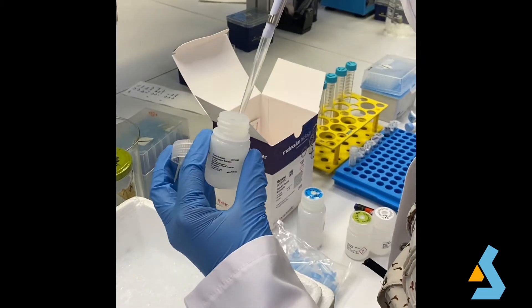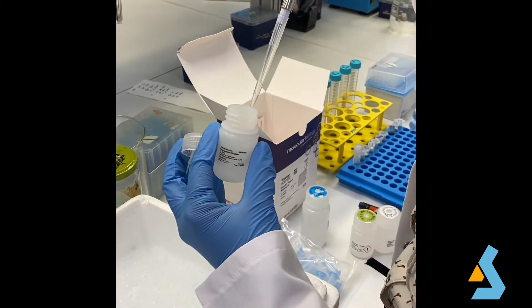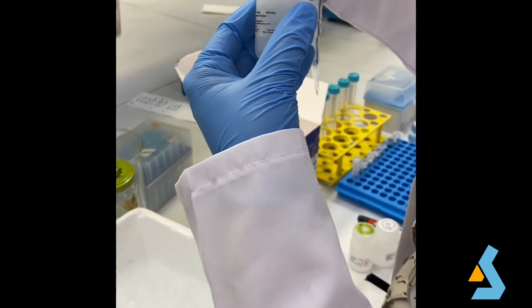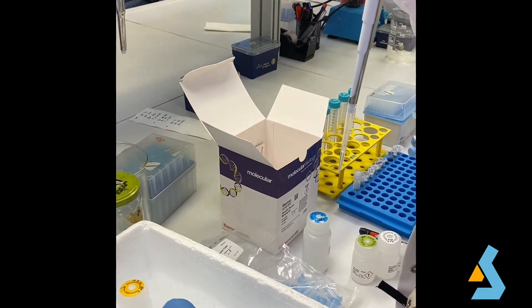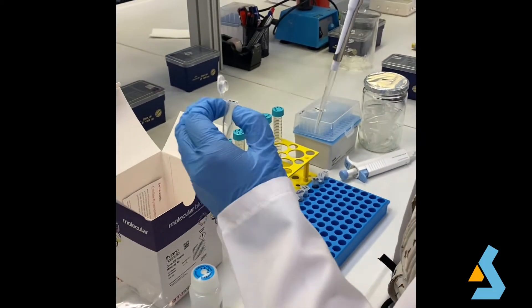After discarding the supernatant, pelleted cells are resuspended in 250 microliters of resuspension buffer. The cells should be resuspended completely by pipetting up and down until no visible cell clumps remain.